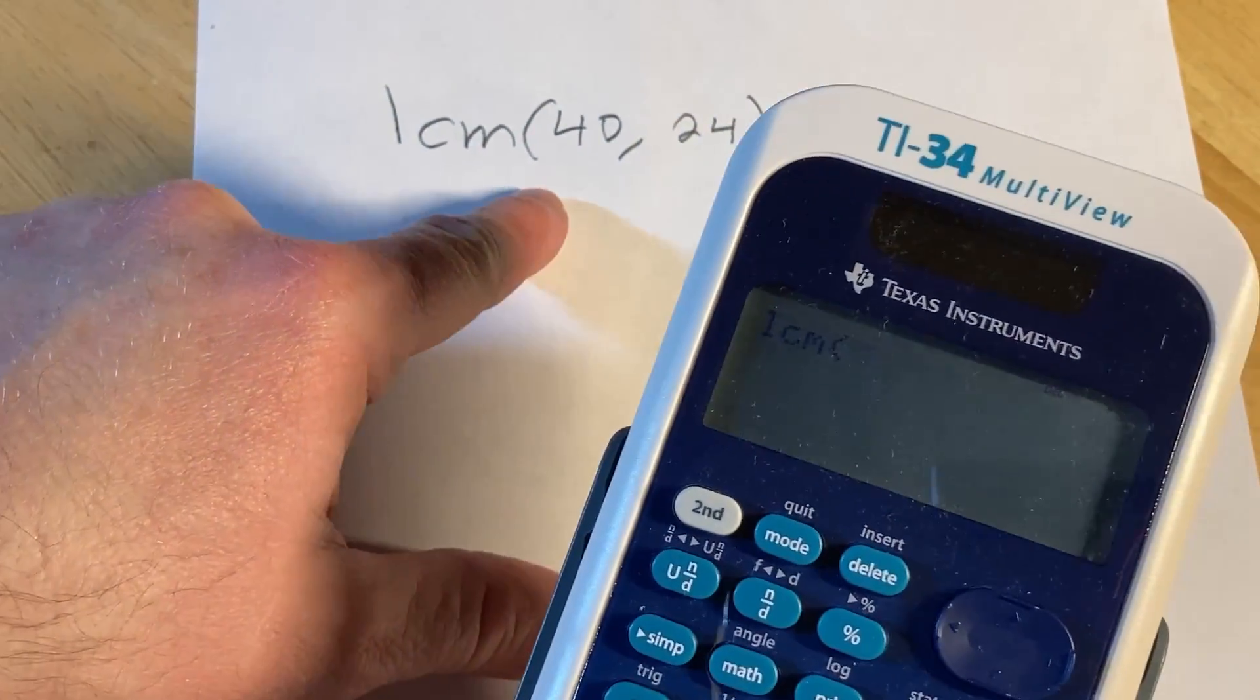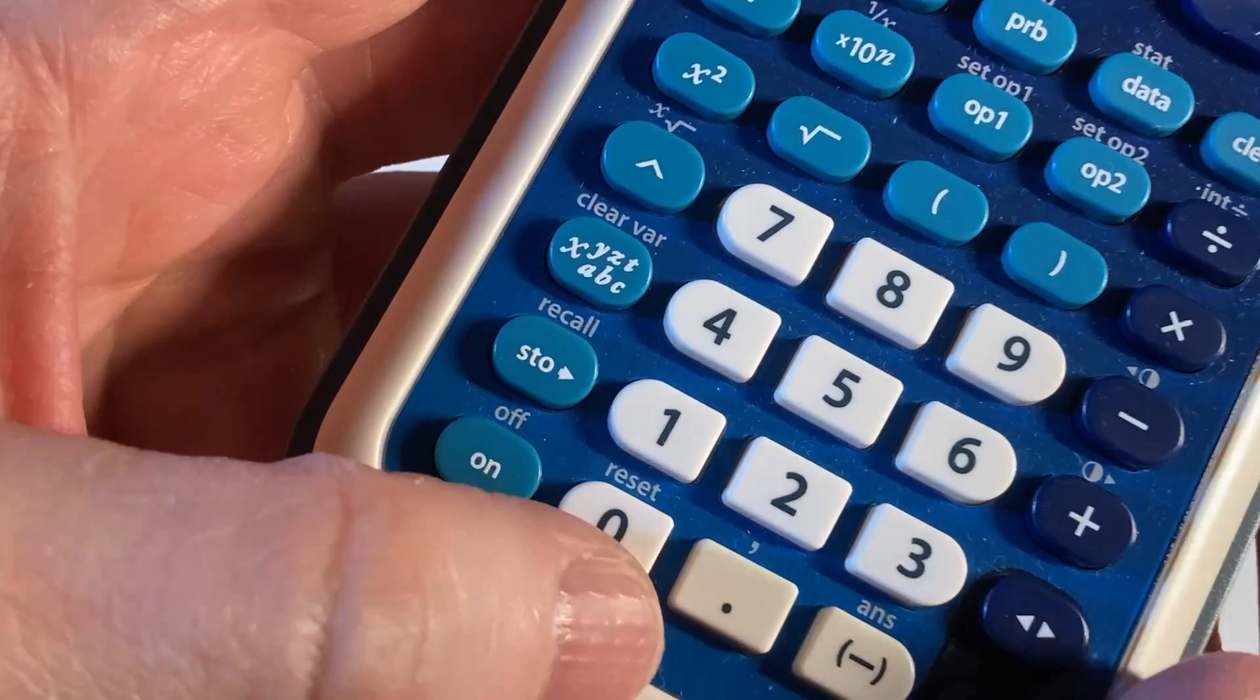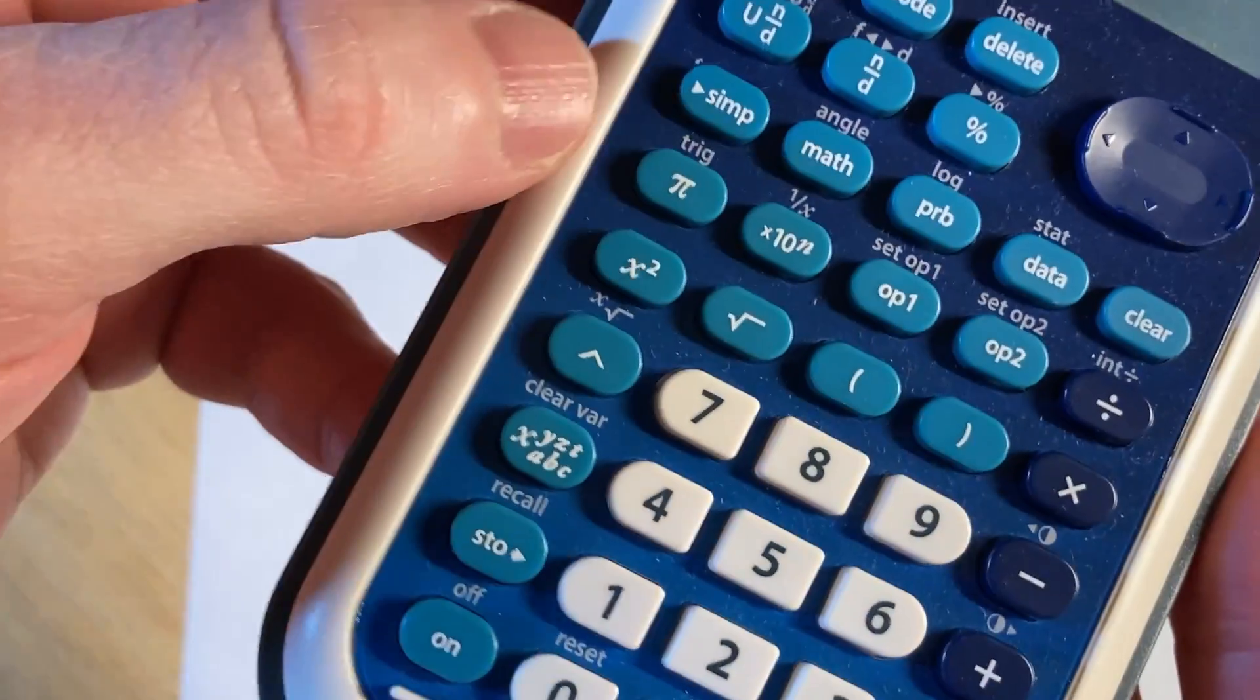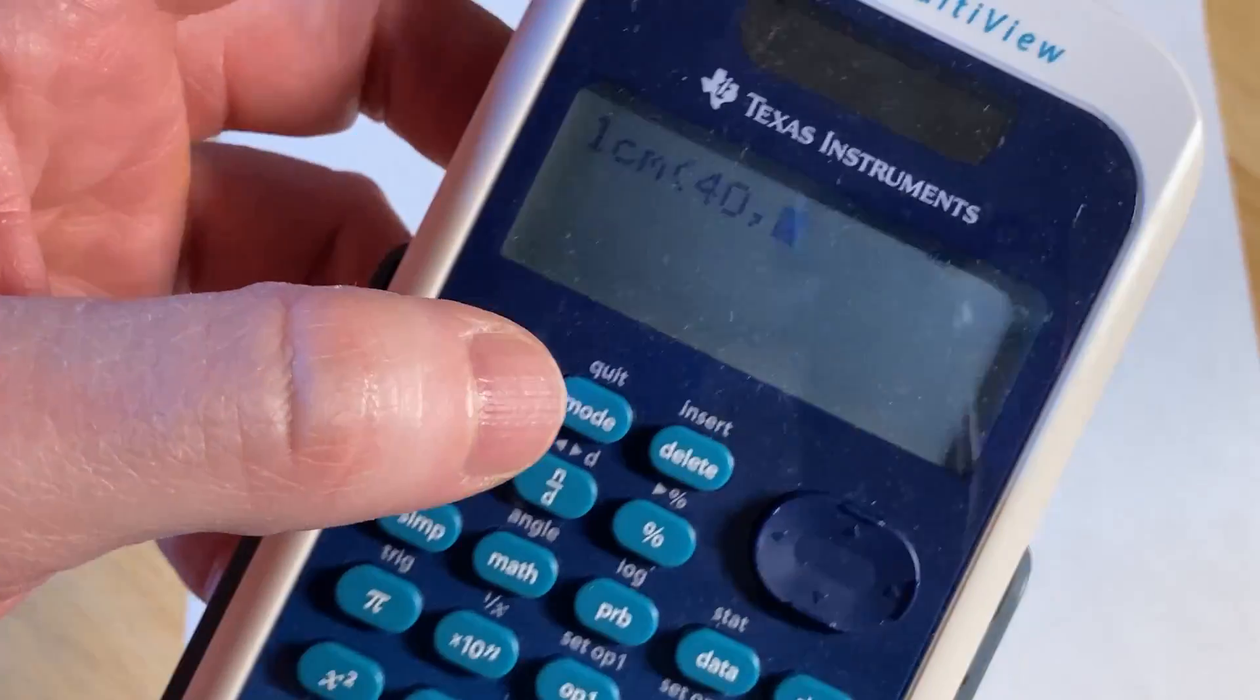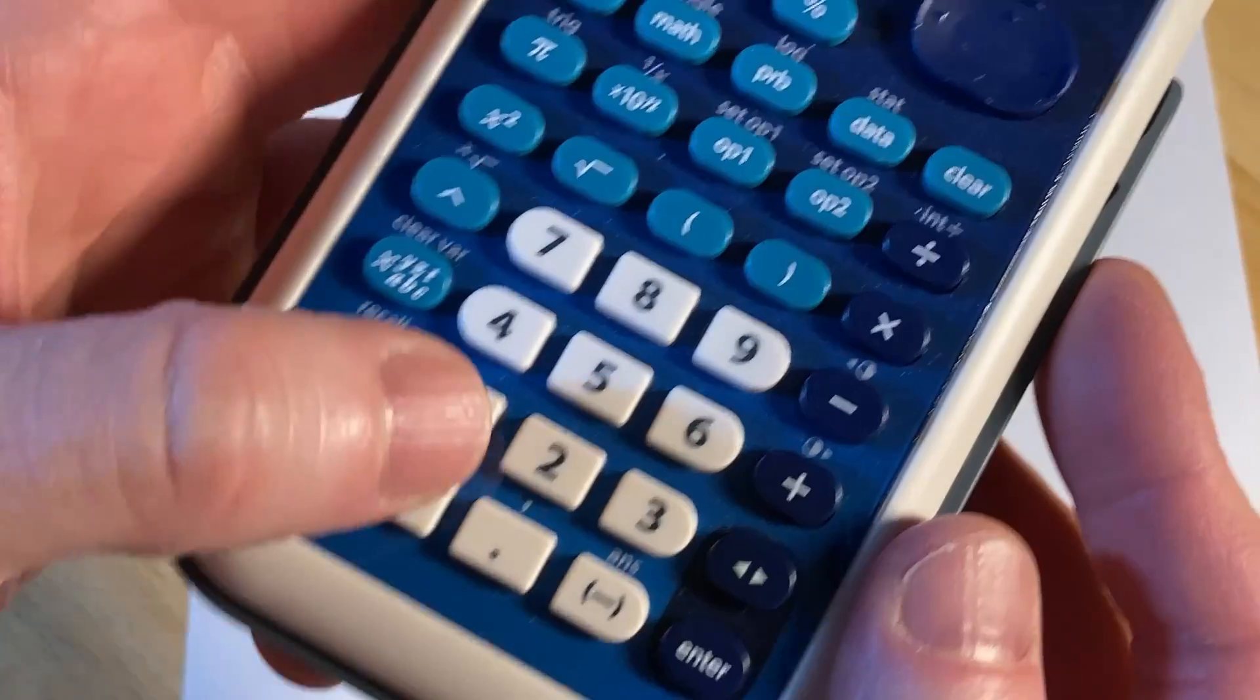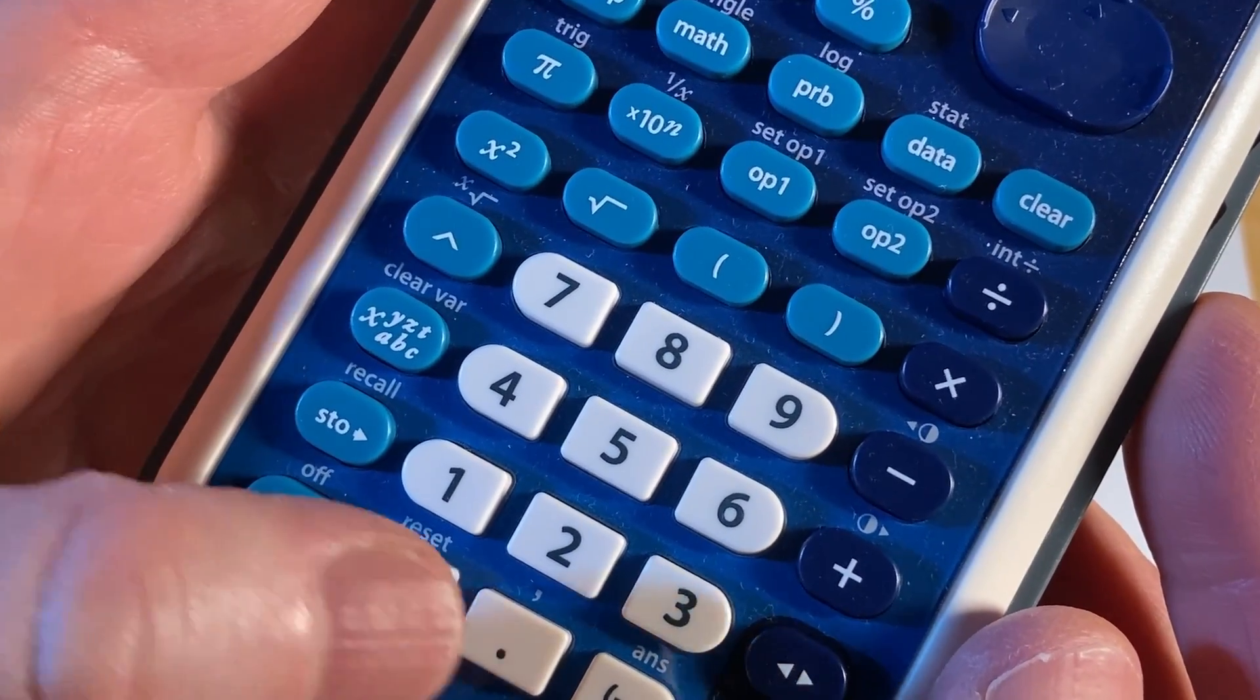Our first number is 40 and then we have a comma. The comma is right there in white, so you have to come back up here and press second first, and then press the comma key, and then you see it shows up there. Again, second and then the period or decimal will give you the comma.